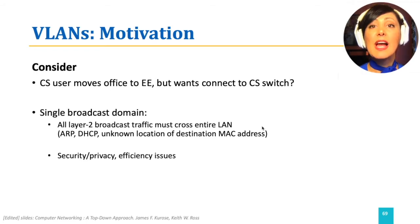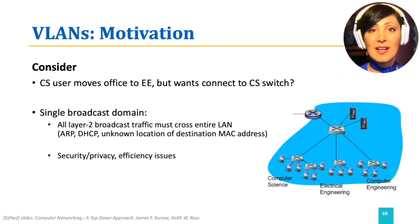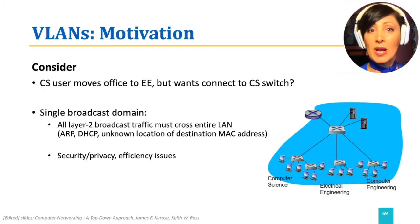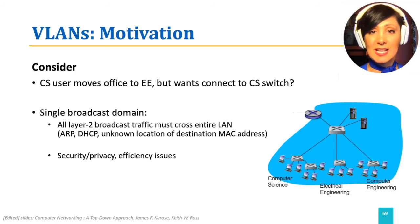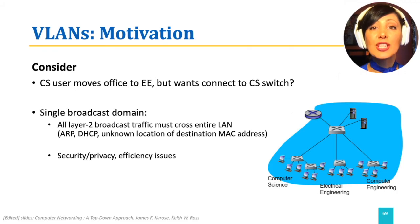For example, if you have a LAN connecting computing science, computer engineering, and electrical engineering departments in a hierarchical way, as you can see in the figure, if a computer science user moves their office to electrical engineering, this might also not be an effective isolation scenario due to the varying number of users in each section, making it harder to realize using the same small repeatable commodity switches.